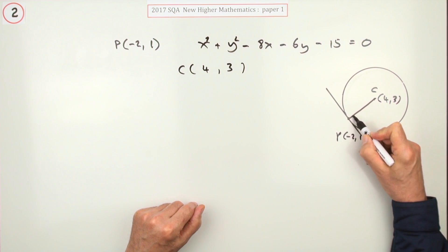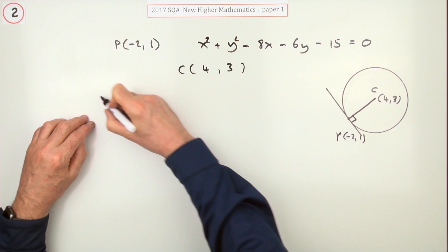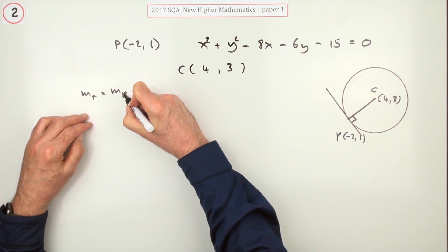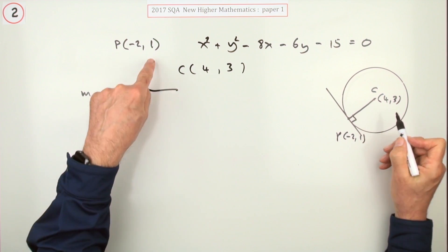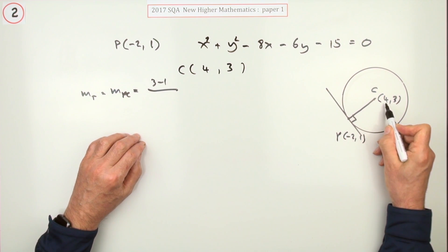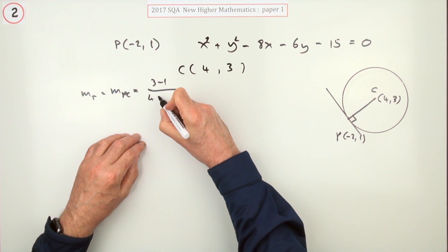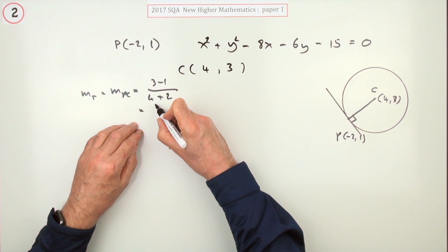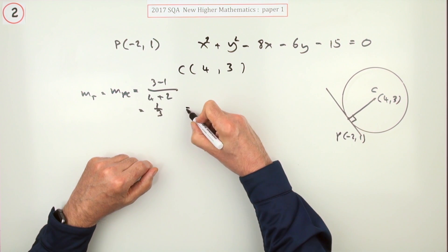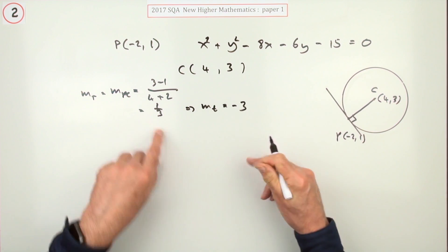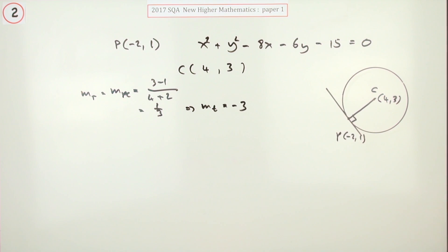The tangent is perpendicular to the radius. So get the gradient of the radius, which will be the gradient of the line p, c. That'll be the difference in the y-coordinates, 3 take away 1. Difference in the x-coordinates, 4 take away negative 2, which I'll go in with 4 plus 2. That gives you 2 upon 6, which is a third. That means that the gradient of the tangent will be the perpendicular to that, which is negative 3, which seems about right. It's going steeply down.